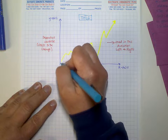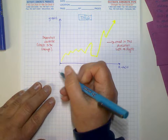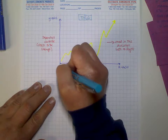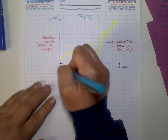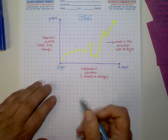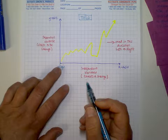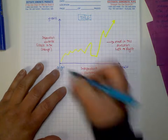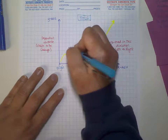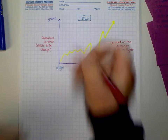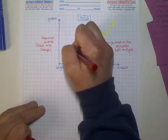Down here, where our x and y axis meet, that is called the origin. That might be similar to what you learned in math class. And we're going to look at what is happening to the graph over time.